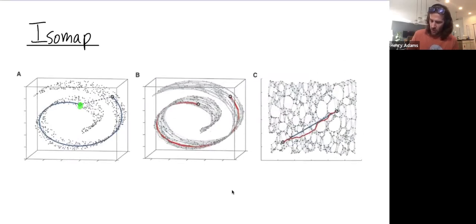The distance between this data point and this data point could be just thought of as the Euclidean distance. But the goal of ISOMAP is instead to say, no, I really want to measure that my space lives on some sort of roll. And I really want to think of the distance between these two data points as this longer green curve.